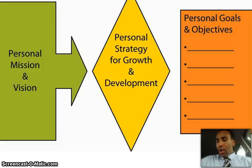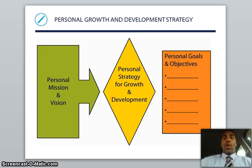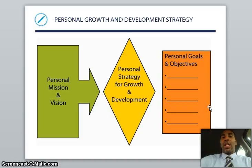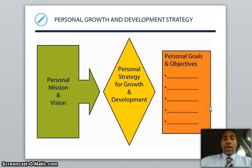Here you have personal growth and development. You have your personal mission and vision — as opposed to looking at it from a company view, you're looking at it from a personal view. You have a personal strategy for growth and development and your personal goals and objectives. I want you to write down at least five personal goals and objectives. It really helps you to write these things down in order to understand what you're looking to do and how you're going to get there.